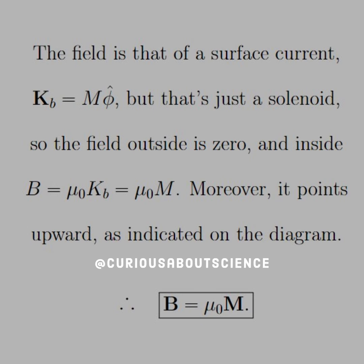A cylinder with a surface current mimics a solenoid — good conceptually. So the field outside is zero, and inside is equal to μ₀ K_B, which equals μ₀ M. Moreover, it points upward as indicated in the diagram, therefore B equals μ₀ M. Pretty straightforward. This technique will definitely be used again, so we'll see it very soon.